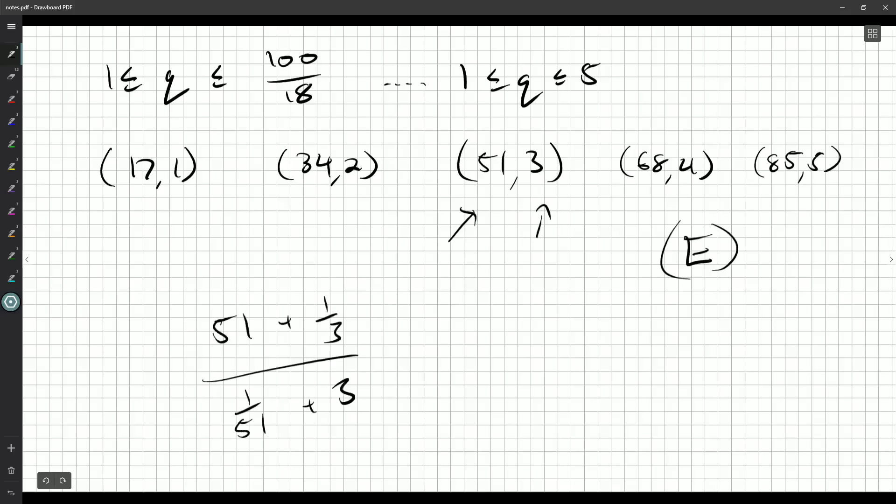Just grab your calculator and work that out. So 53 and 1 3rd divided by, and then in brackets, I'll have 1 over 51 plus 3. And look at that. It got, it became 17. Okay. So everything works out.